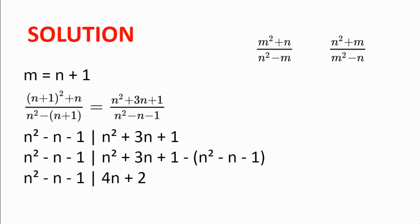We substitute m = n + 1 into both fractions. For the second fraction we get (n² + 3n + 1) / (n² - n - 1), which must be an integer. So n² - n - 1 divides n² + 3n + 1, and therefore also divides (n² + 3n + 1) - (n² - n - 1) = 4n + 2.